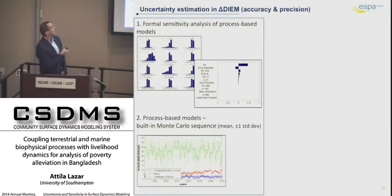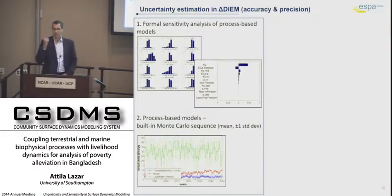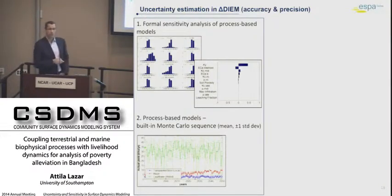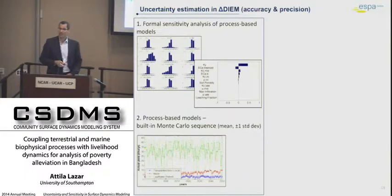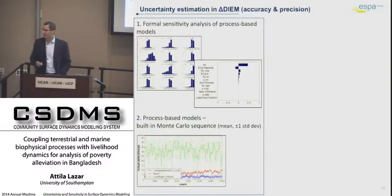We are going to have an automated built-in Monte Carlo sequence in the integrative framework. When the integrative model runs once, the crop productivity model is going to be run 16 times, varying the most important parameters and estimating the uncertainty around the mean output of the model.